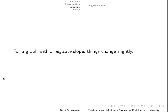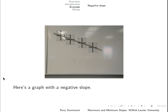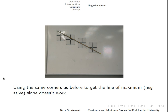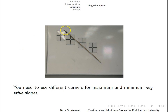For a graph with a negative slope, things change a bit. Here's an example of a graph with a negative slope, and the line of best fit is shown. If we use the same corners as before to get the line of maximum negative slope, it doesn't quite work, because we can move this line in either direction and it will still be within the error bars. So we can make a steeper negative slope by moving it. If we catch this upper right corner of this point and this lower left corner of this point, now we have a line of maximum slope that goes through all of the error bars. The corners that you need to use are different depending on whether the slope is positive or negative.